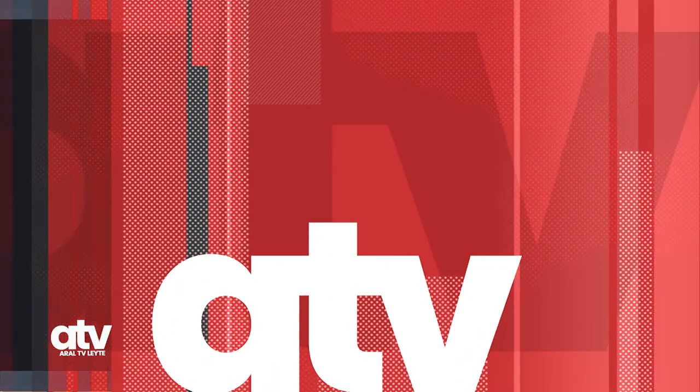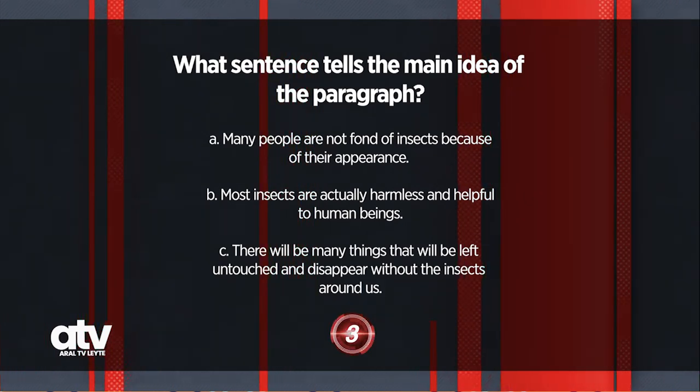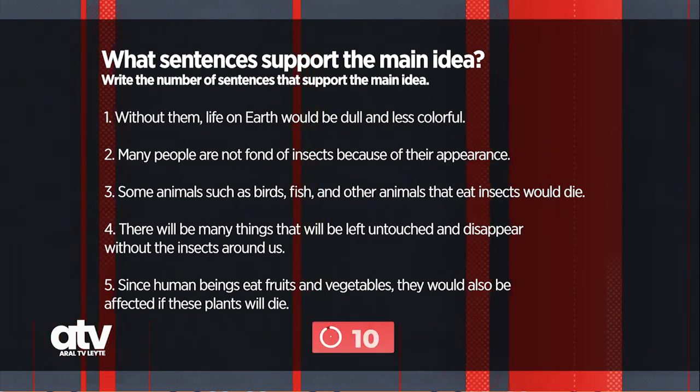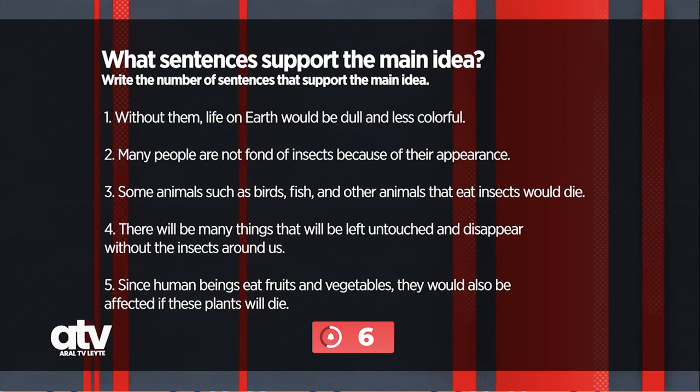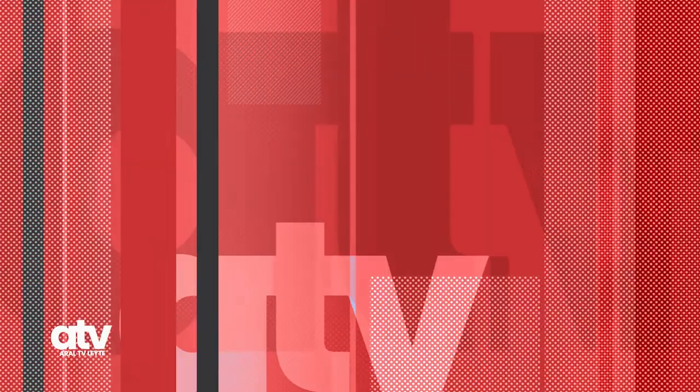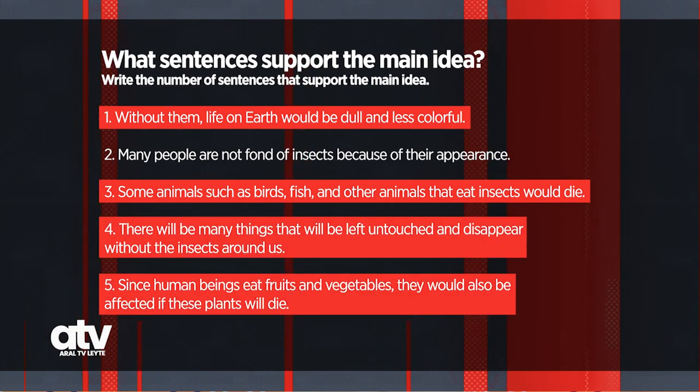Let us check your answers. What is the sentence that tells the main idea in the paragraph? Letter B tells the main idea of the paragraph: that insects are actually harmless and helpful to human beings. What sentences support the main idea? Sentences 1, 3, 4, and 5 are the supporting details.